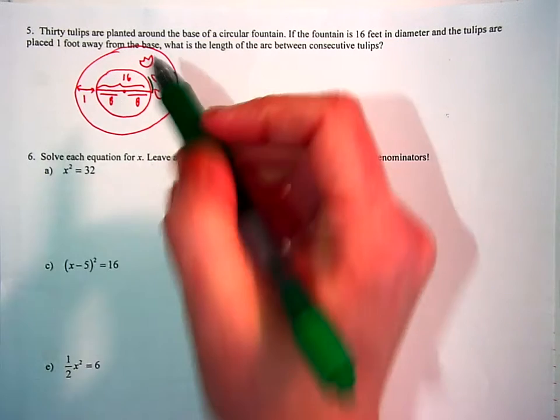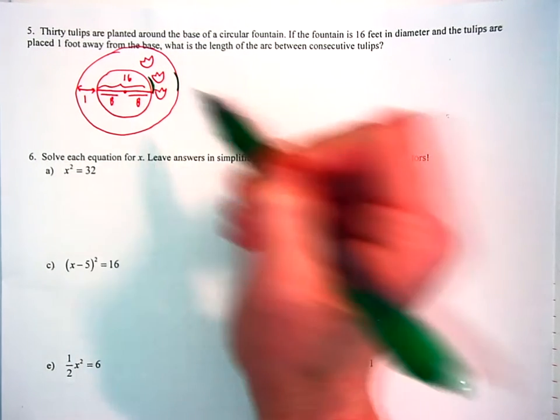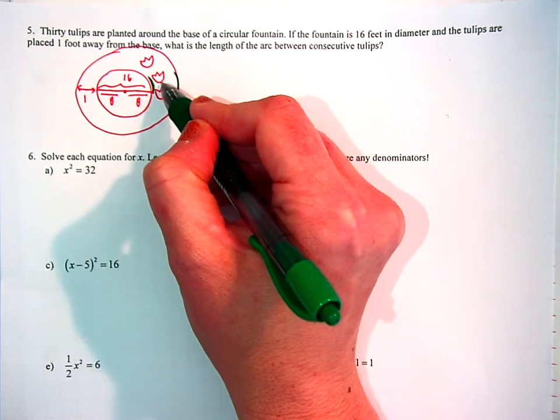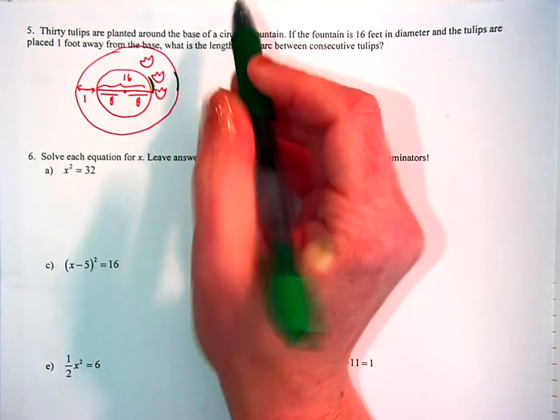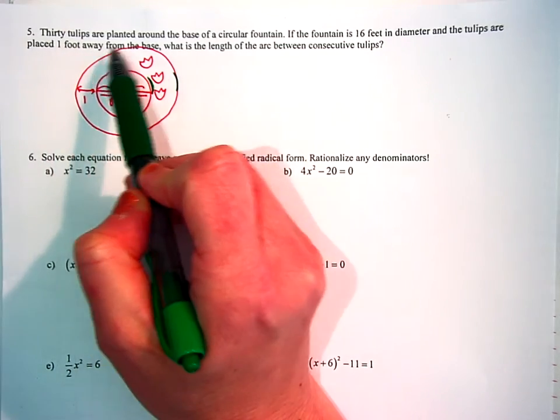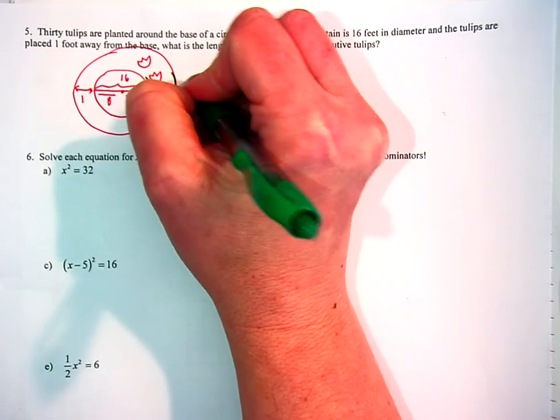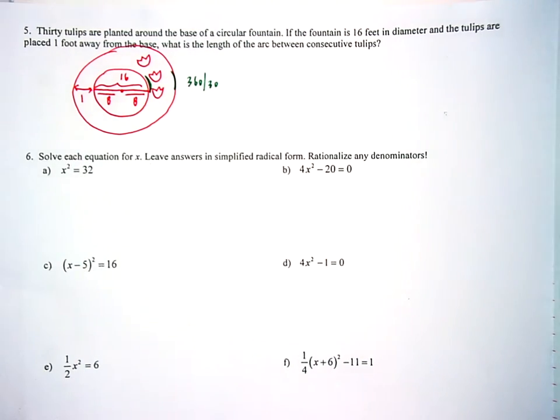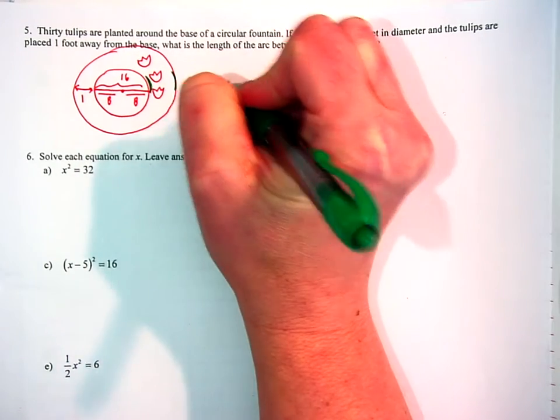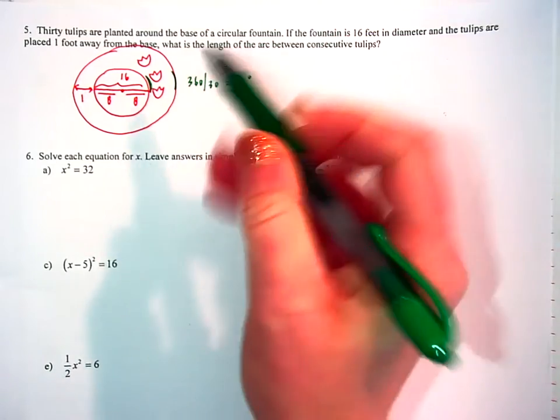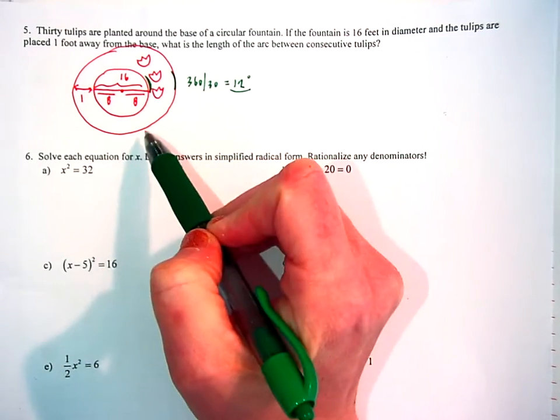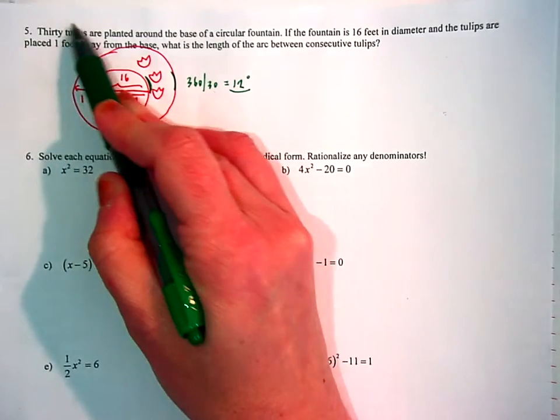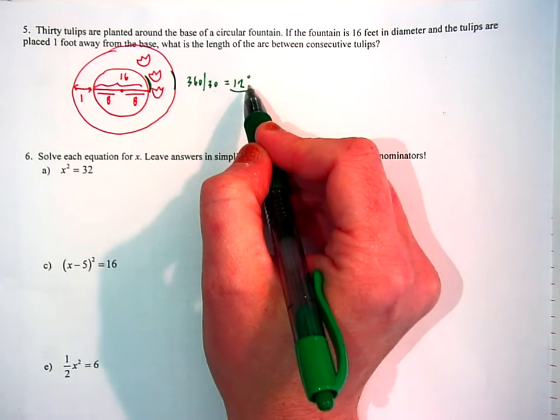So let's say that we decided that we're solving for this first arc right here. First thing that I'd have to know is, what is the degree measure that they are apart? So if I'm told that I have 30 tulip plants around the base of a circular fountain, and here we're assuming that they're all equidistant, if I divide by 30, so if I take my 360 and I divide it by 30, that gives me 12, 12 degrees. So they're 12 degrees apart. So again, 360 all the way around, I'm just splitting it 30 ways because I have 30 tulip plants, so that gets me 12 degrees. So they're 12 degrees apart.